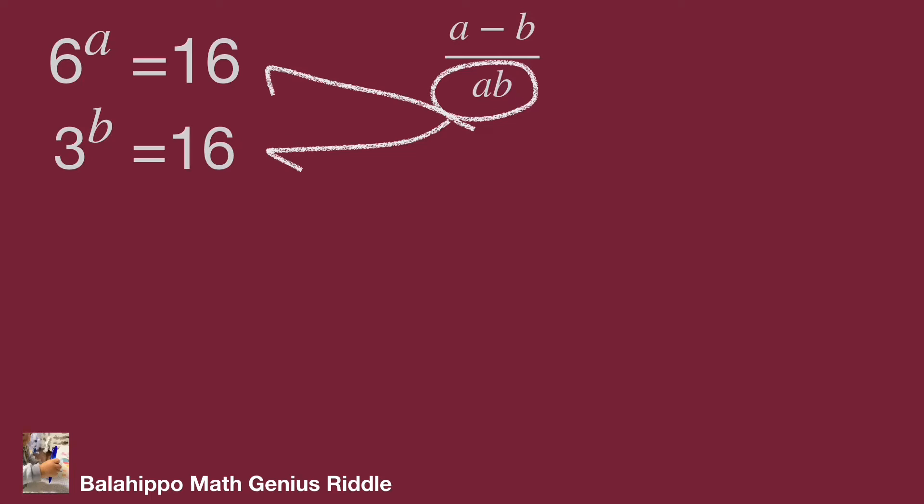Here, I'm going to generate ab. 6 power of a equal to 16, power of b both sides. Then, become 6 power of ab equal to 16 power of b.